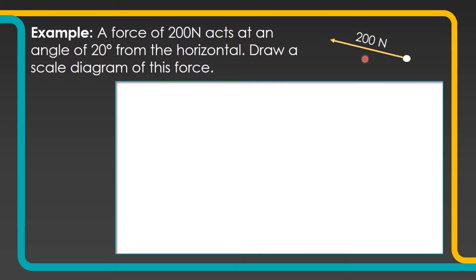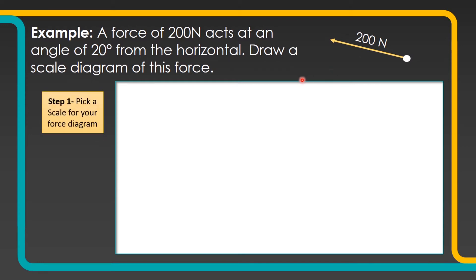There are several steps we need to go through to draw this diagram. The first step is to pick a scale. You need to make sure your diagram is reasonably big — if you pick a really small scale, say 1 centimetre to 200 newtons, you're not going to pick up the marks. It needs to be an appropriate scale, just like we would with a graph.